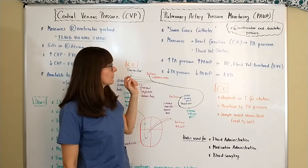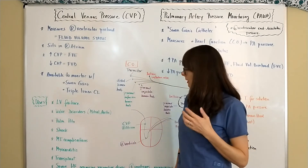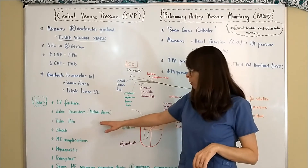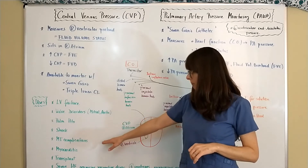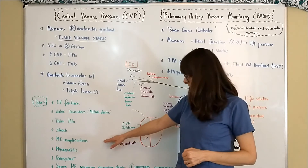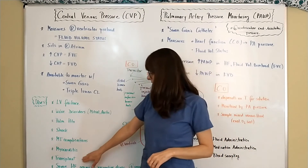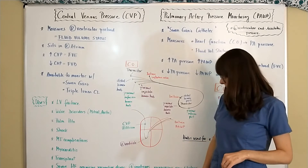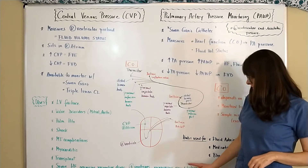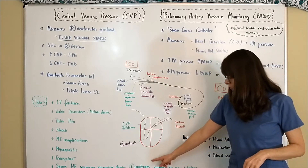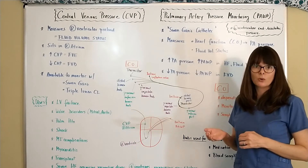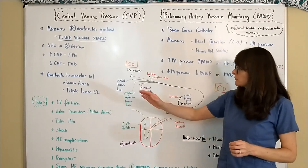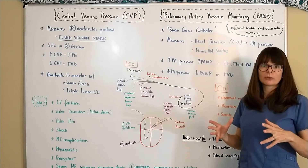Both of these invasive hemodynamic monitoring methods are used for patients with left ventricular failure, valve disorders, pulmonary hypertension, any kind of shock, complications from an MI including cardiogenic shock, myocarditis, transplant candidates, or patients with severe heart failure who require vasoactive drugs — including positive inotropes, vasopressors, or vasodilators. Inotropes help with contractility, which is a factor that determines cardiac output. Vasopressors are needed when there is fluid volume deficit, and vasodilators when there is fluid volume excess, to help regulate blood pressure.